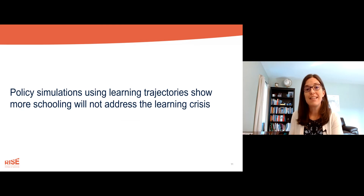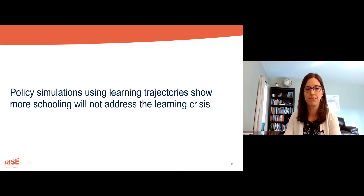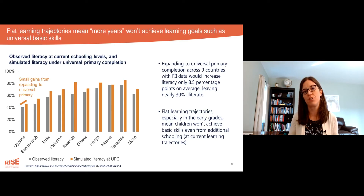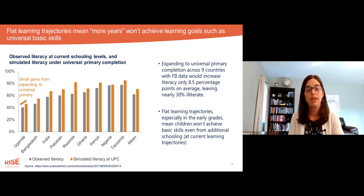In the second set of findings, we see that policy simulations using learning trajectories show that more schooling will not address the learning crisis on its own. This study drew on the same financial inclusion insights data shown earlier and used learning trajectories to simulate possible gains from increasing years of schooling at observed learning trajectories.